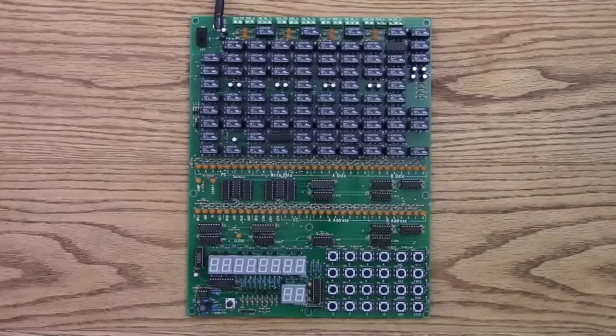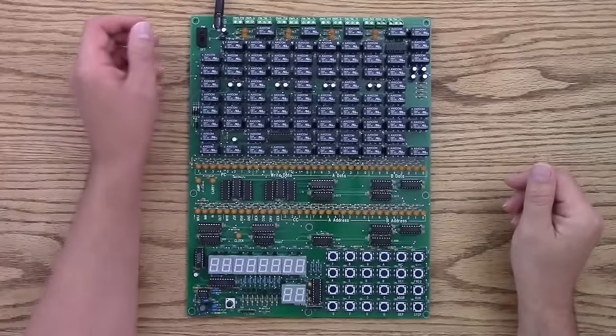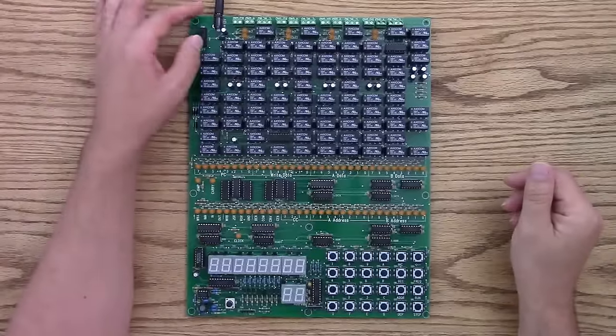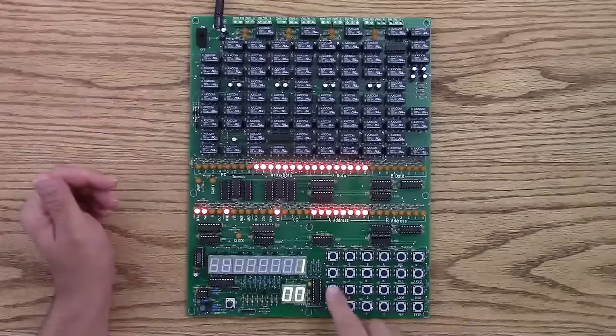Hi, here's the single board relay computer. Now the quickest way to show it running is to use the built-in demo program. So what you do is just turn it on and jump to hexadecimal address 10.